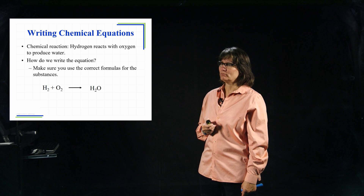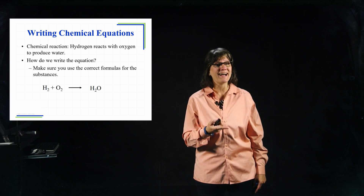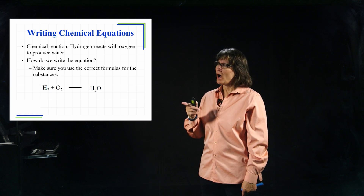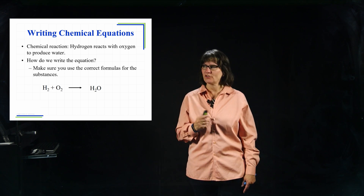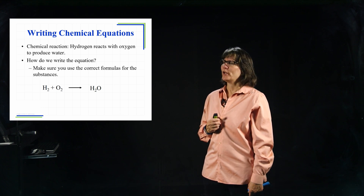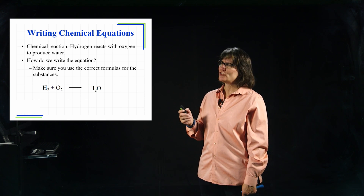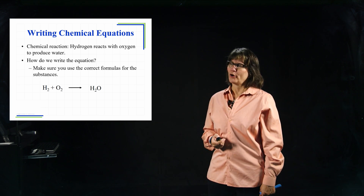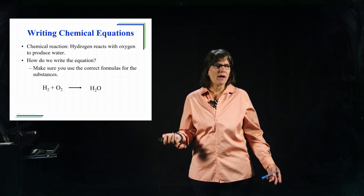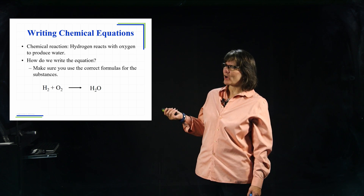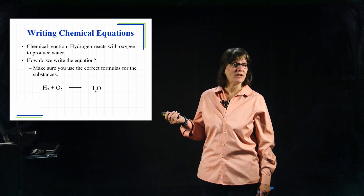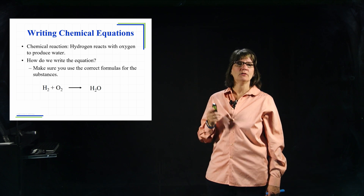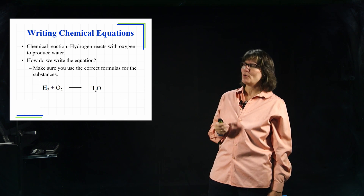Now you may have written this down. Hydrogen is one of our diatomic elements. Oxygen is also one of our diatomic elements, so we write it as O2. We don't do H plus O — we do H2 plus O2. Then we write a good formula for water, H2O. We can't write H2O2 to match the number of oxygens because the formula for water is not H2O2 — that's peroxide.